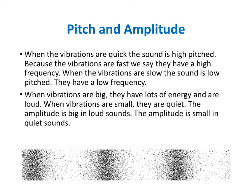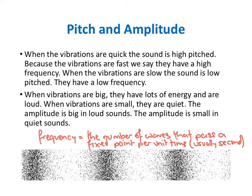We need a clear definition of frequency. Frequency is defined as the number of waves that pass a fixed point per unit time. The unit for frequency is hertz (Hz), which means per second. So if there's a frequency of 5 hertz, five waves are passing a point per second; at 20 hertz, twenty waves pass per second. The higher the hertz value, the higher the frequency — 100 hertz has far more waves passing a point per second than 5 hertz.